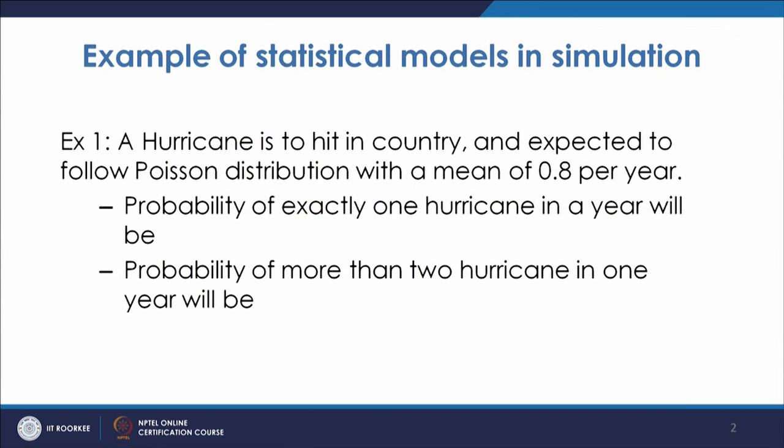The first problem is regarding a hurricane which is expected to hit a country, and it is expected to follow a Poisson distribution with a mean of 0.8 per year. We have to find the probability of exactly one hurricane in a year, and then the probability of more than two hurricanes in a year.